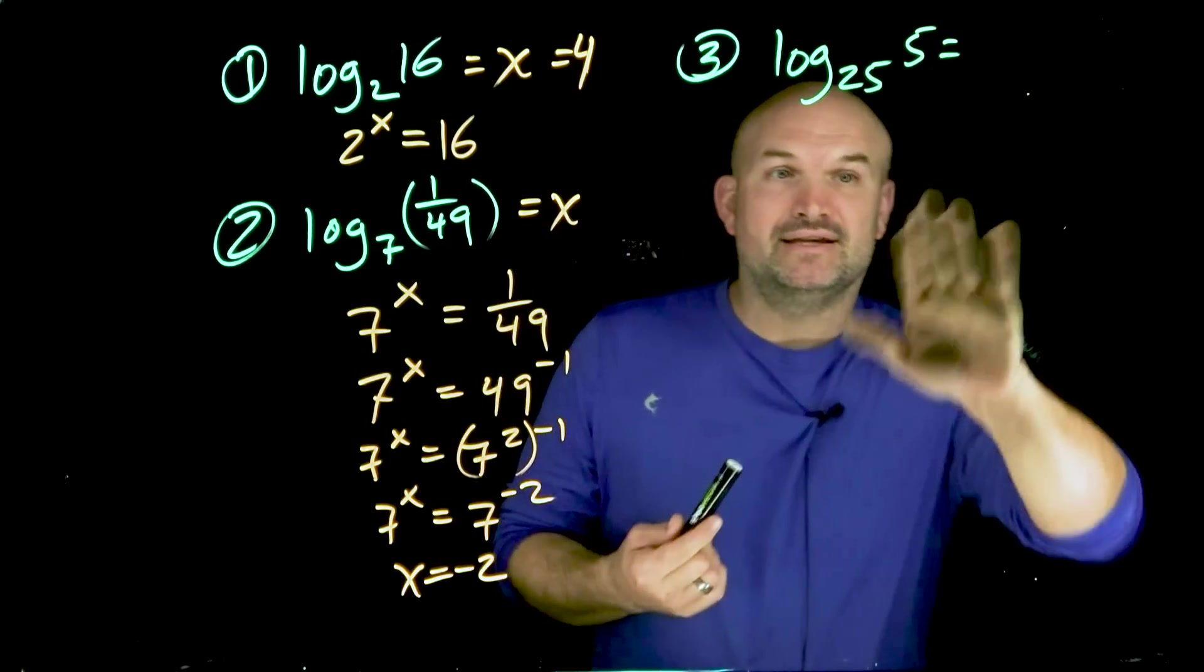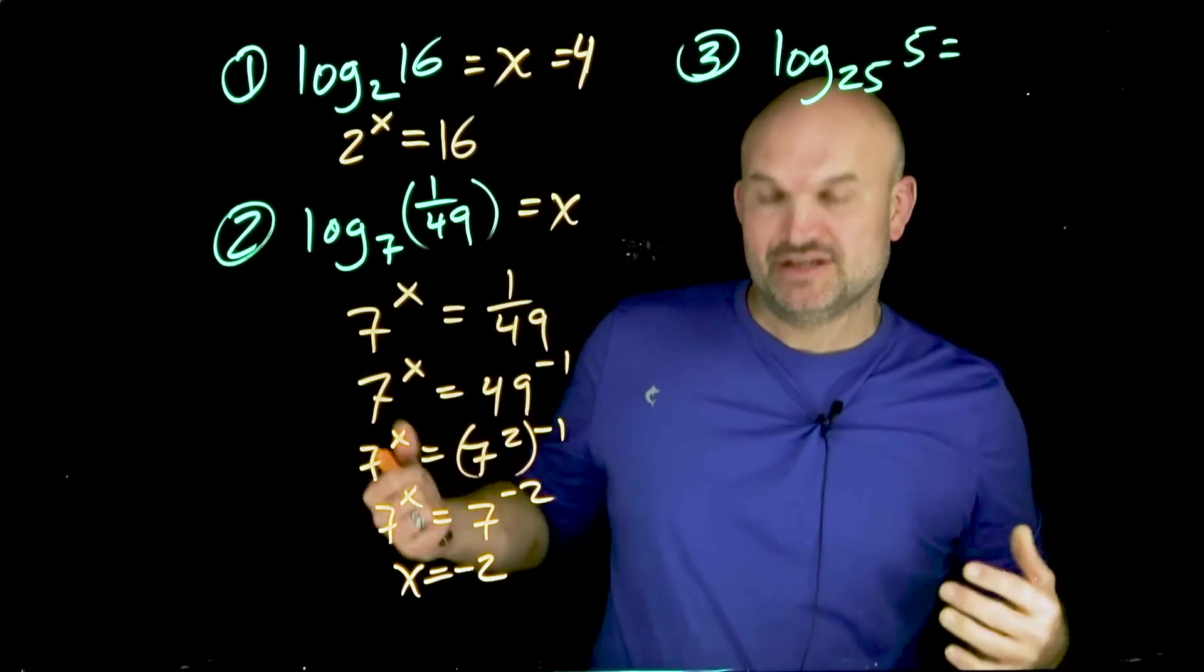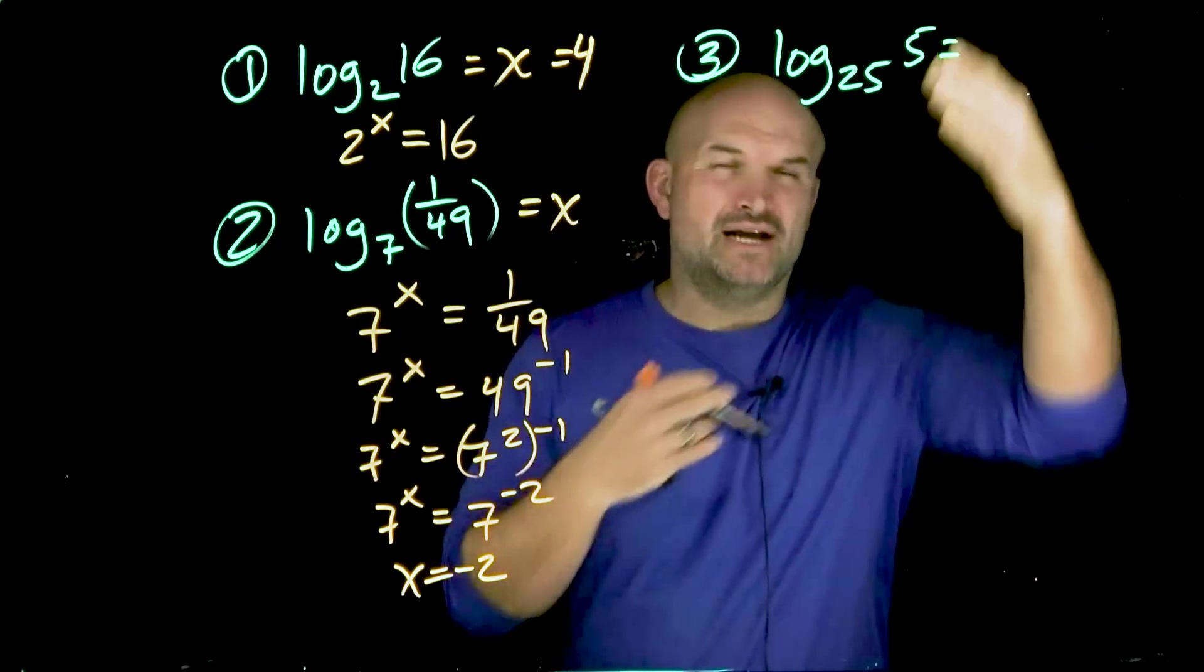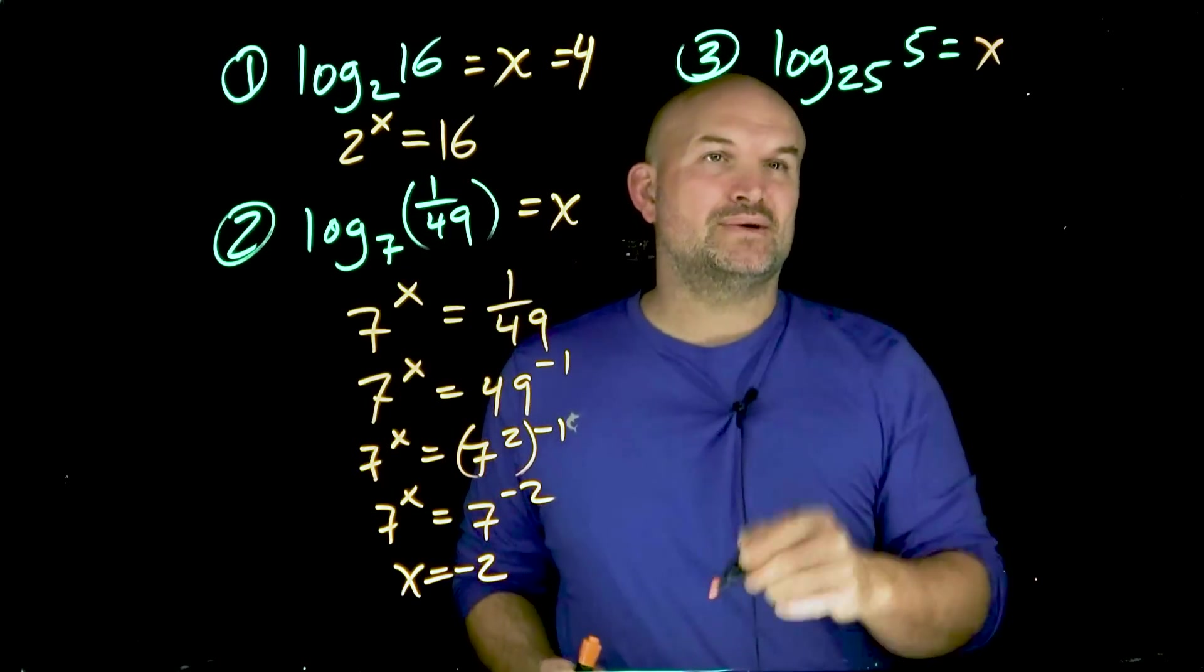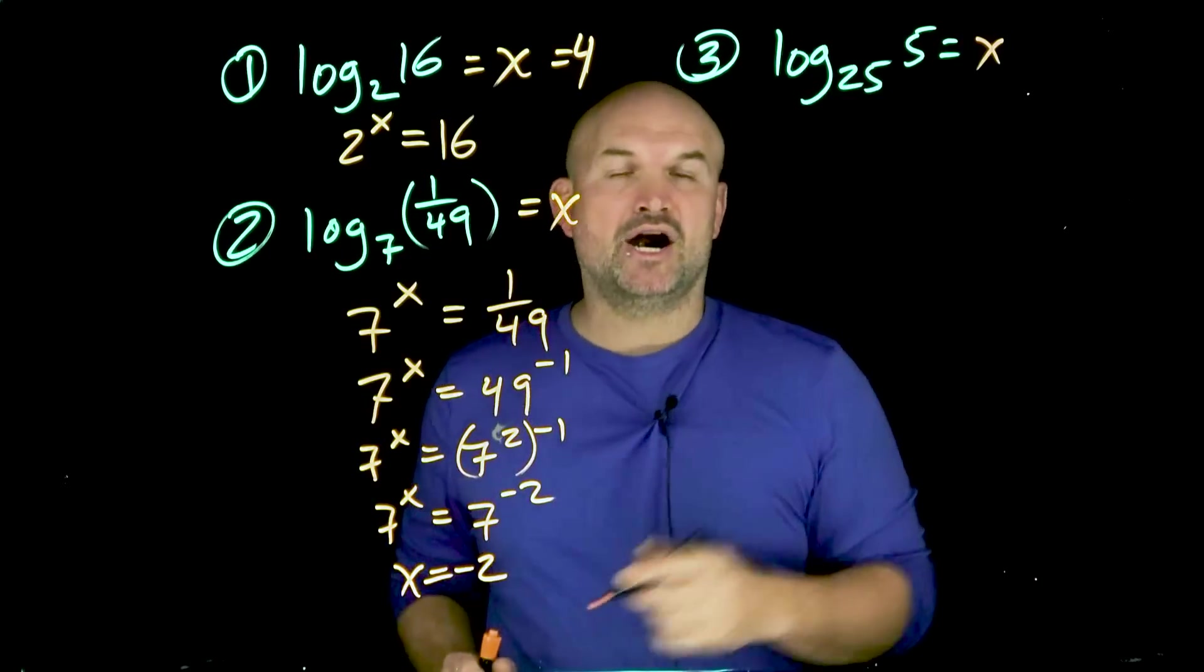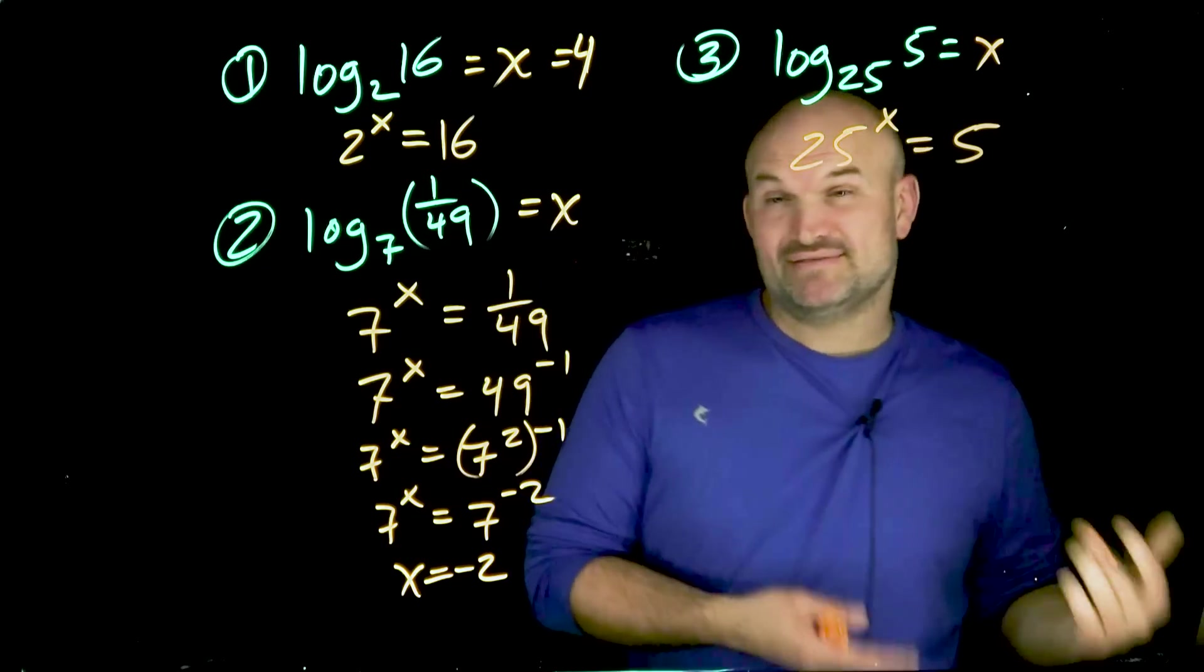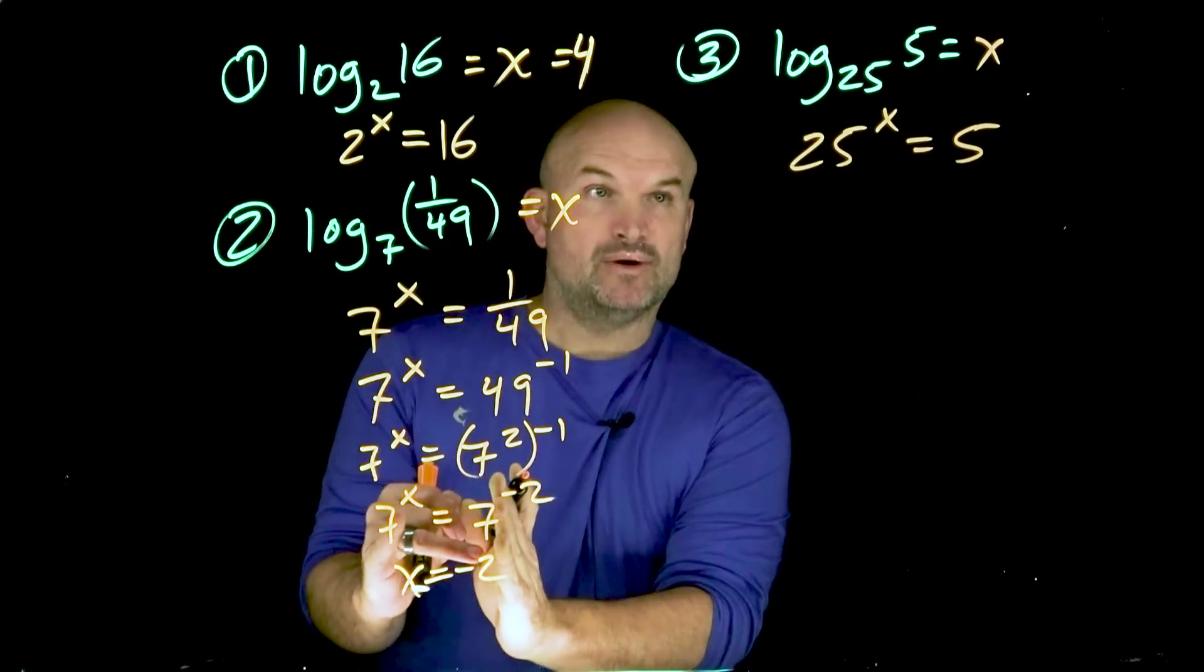In this case, we don't have a fraction, but if you're thinking about 25 raised to what number is going to equal 5, that doesn't make a lot of sense. So let's rewrite it in our exponential form: 25 raised to the x equals 5. They don't have the same basis, so I cannot use my one-to-one property here.